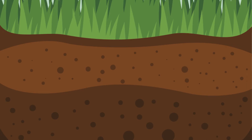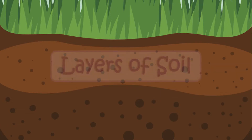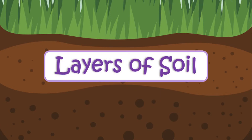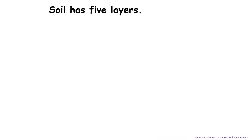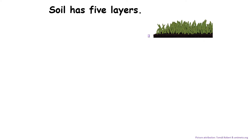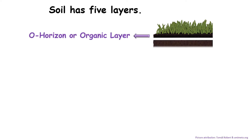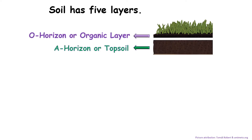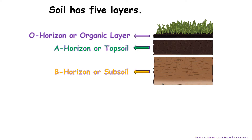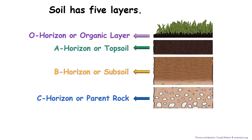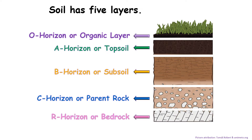In this video lesson, we will learn about layers of soil. Soil has five layers: O horizon or organic layer, A horizon or topsoil, B horizon or subsoil, C horizon or parent rock, and R horizon or bedrock.